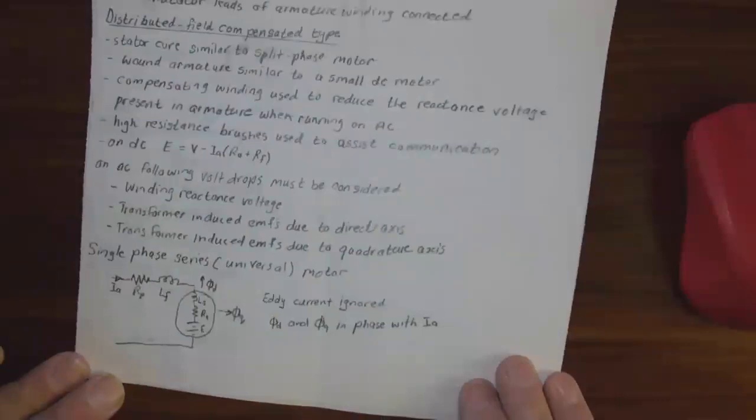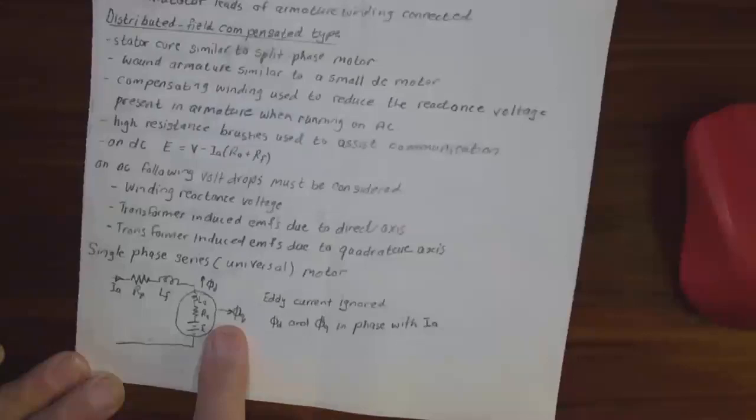That is the single phase series universal motor single line drawing. We've got the armature current, resistance of the field, inductance of the field, and then the armature.